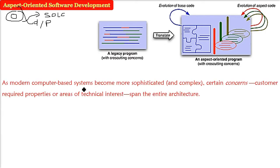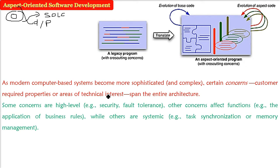Today, computer-based systems are so sophisticated, complex, and modern. There are various concerns, phases, and dimensions that customers provide along with technical interests — there will be hardware, electronics, communication technology, all these are involved. So the entire architecture has to be considered. We are talking about aspects and concerns — whatever dimensions are there, the aspect we are talking about.